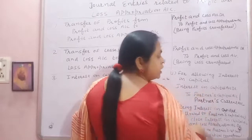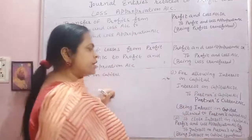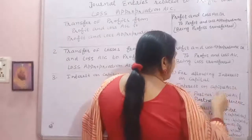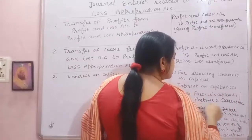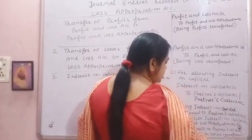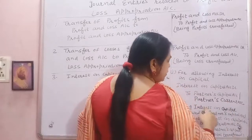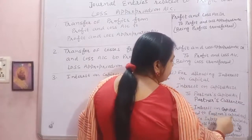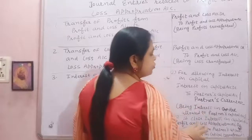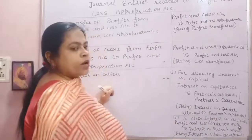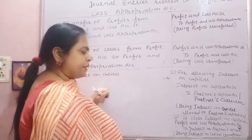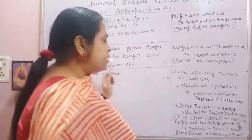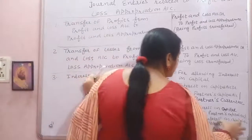अगर capital fixed हो तो entry क्या बनेगी: Interest on Capital Account debit to Partners Current Account. और इसकी narration है: being interest on capital allowed to partners capital — कि हमने उनको interest allow कर दिया है उनकी capital पर। उसके बाद इसी की second entry है to close interest on capital account.